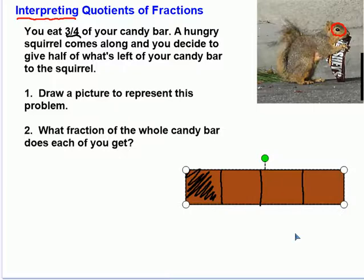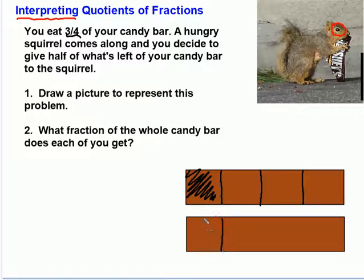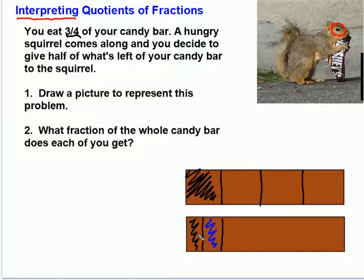The hungry little squirrel comes along and we feel guilty for him, so we decide to give him half of whatever's left over. We split this piece in half and give it to him. The question is, how much does each of us get? We'll each get half. But does that mean each of us gets half a candy bar? Well, no — of course not. You get half of whatever is left over, and that's one-fourth. This is one-fourth of a candy bar.